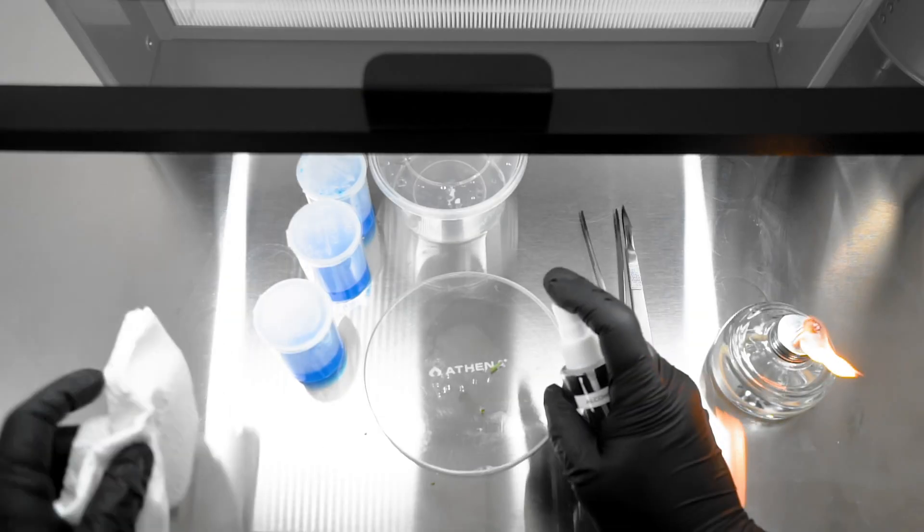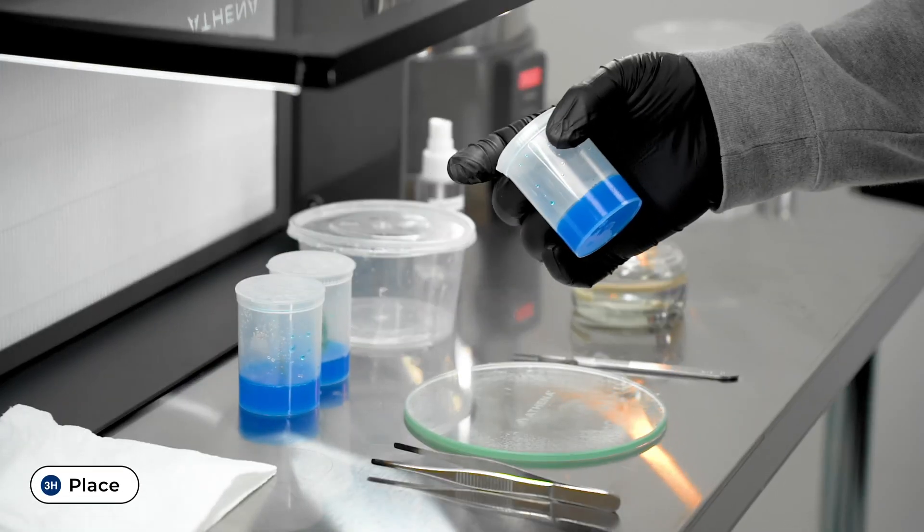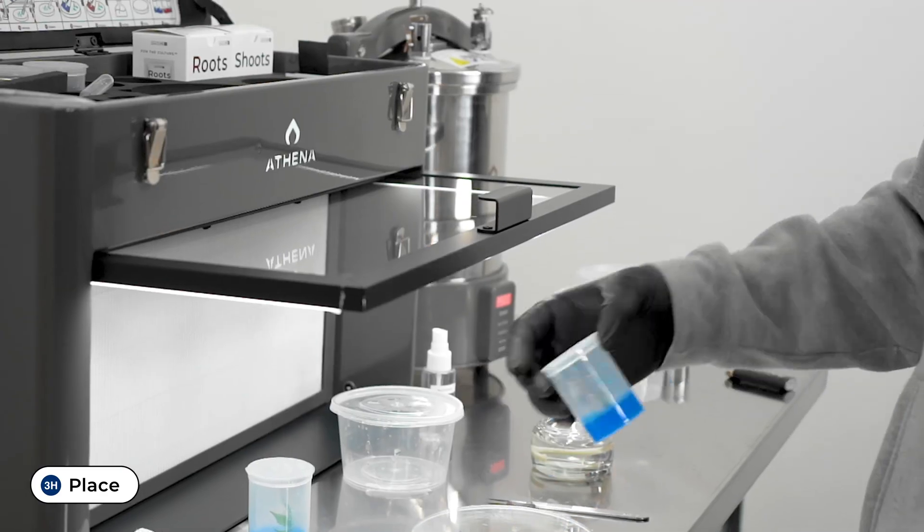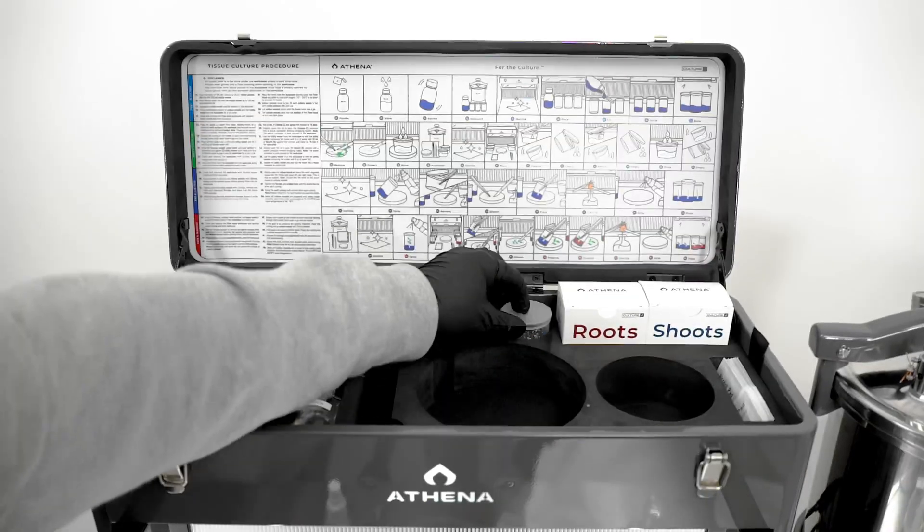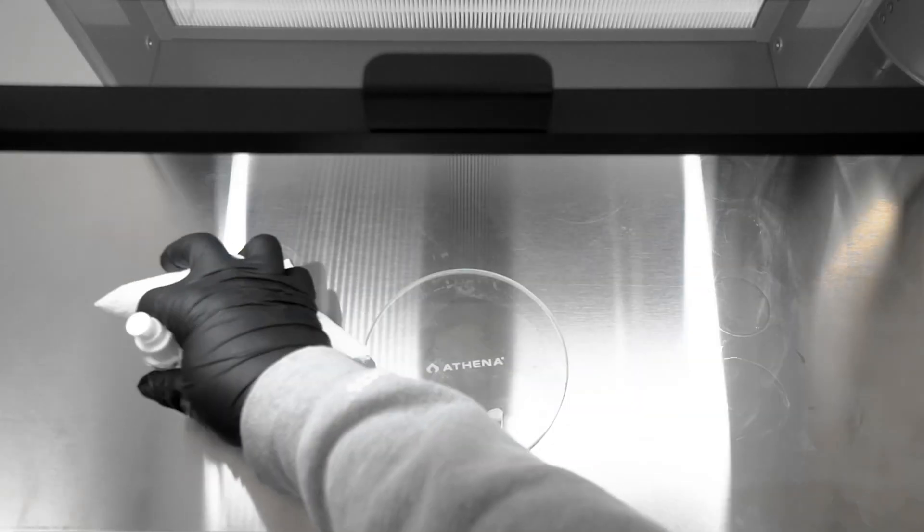When all culture vessels are prepared with newly made explants, store them under a clone light at 75 to 125 ppft and a room temperature of 68 to 78 degrees Fahrenheit.